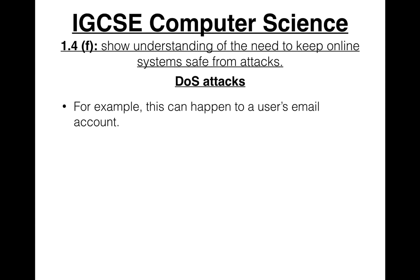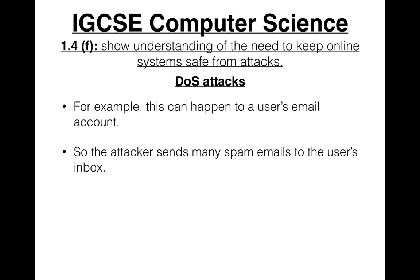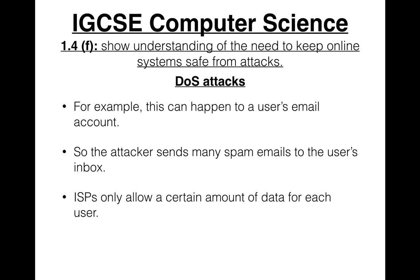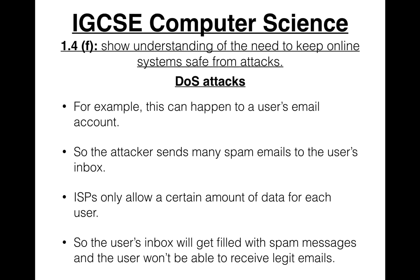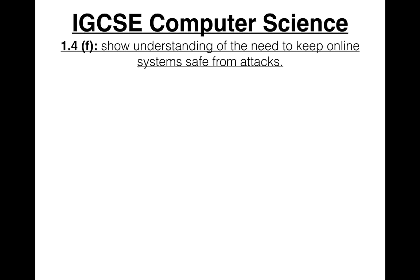For example, with a user's email account: the attacker sends many spam emails to the user's inbox. ISPs only allow a certain amount of data per user, so when the inbox fills with spam, the user won't be able to receive legitimate emails — they are essentially denied service.